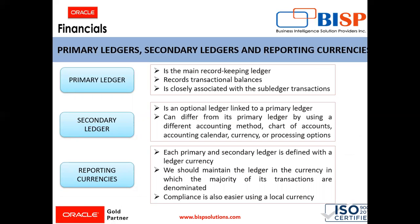The primary ledger is the main record-keeping document. It records the transactional balances and is closely associated with the subledger transactions. We have to define the primary ledger in the system first. To determine how many primary ledgers are needed — suppose we have two countries in which our organization is operating and both have different reporting currencies, there will be a requirement for different primary ledgers, as one of the Cs has changed. We cannot use the same primary ledger for another legal entity as the reporting requirements of that country will be different.